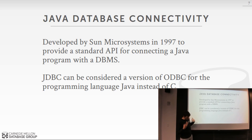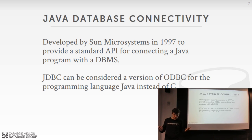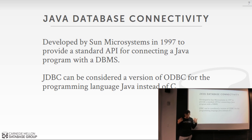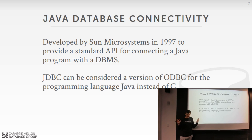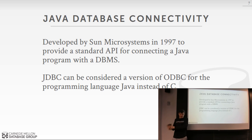In the Java world, instead of ODBC they have JDBC. Sun in the 1990s recognized that Java programs running in the enterprise need to connect to databases, so they proposed their own standard programming API called JDBC. It's heavily modeled after ODBC — the simple way to think about it is: ODBC is for C programs and JDBC is for Java programs, but at a high level they're doing the same thing.